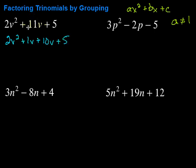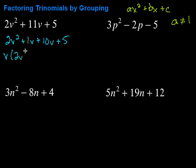Notice what I did here — I just took that eleven V and rewrote it, broke it up into two pieces. If I combine those back, it would be the eleven V I started with. Now I'm going to factor this by grouping. I look at the first two terms and then the next two terms, and pull out what I can. In this case, the first two terms have a V in common, so I'm going to pull a V out of there, giving me V times two V plus one.